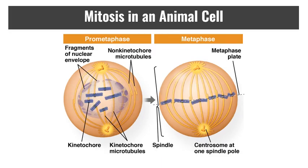In prometaphase, the nuclear membrane is basically gone — you just have fragments. The key feature of prometaphase is that the microtubules will connect: they either connect to the centromeres and form the kinetochore (the movement center), or they connect as non-kinetochore microtubules that push against each other, allowing the cell to sense locations and structures within it.